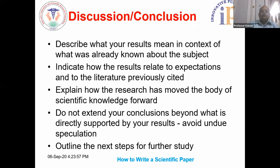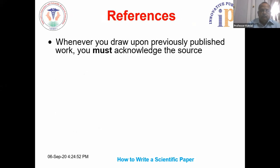You can outline the next steps by suggesting the limitations of the study and what future work can be done on those aspects. Whenever you draw upon previously published work, you must acknowledge the source — the other work should be referenced in a scientific way. Any information not from your experiments and not common knowledge should be recognized by a citation.